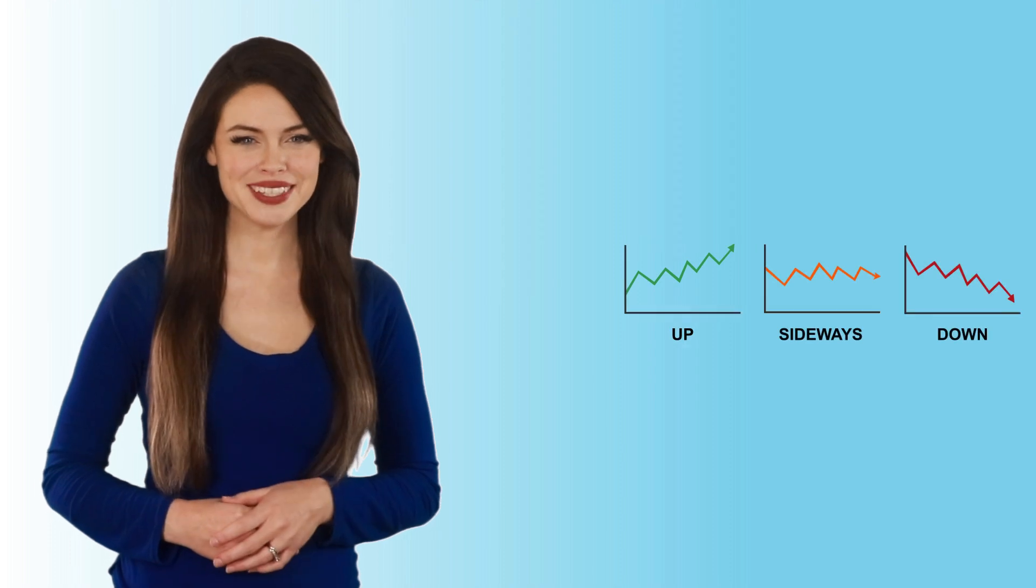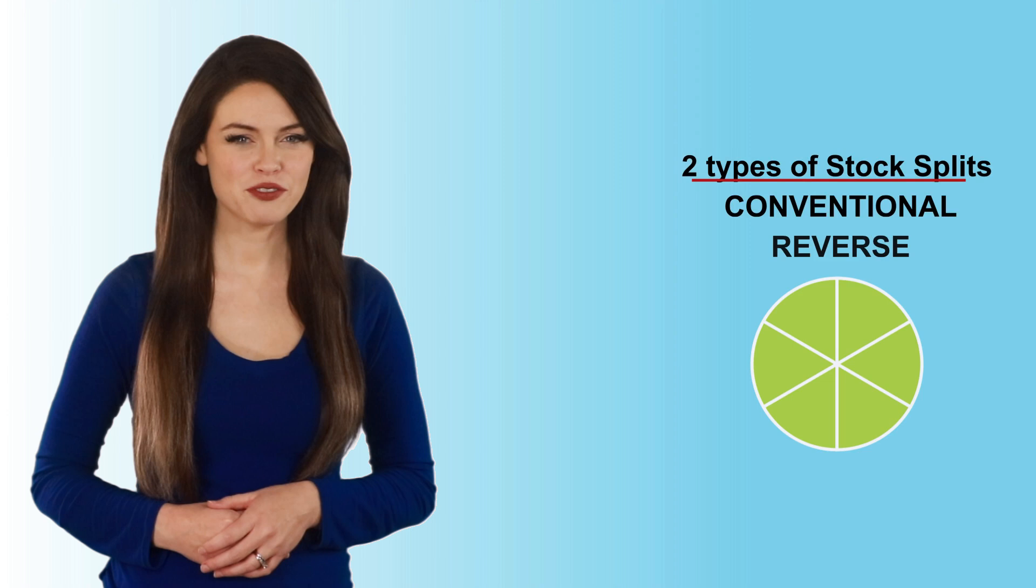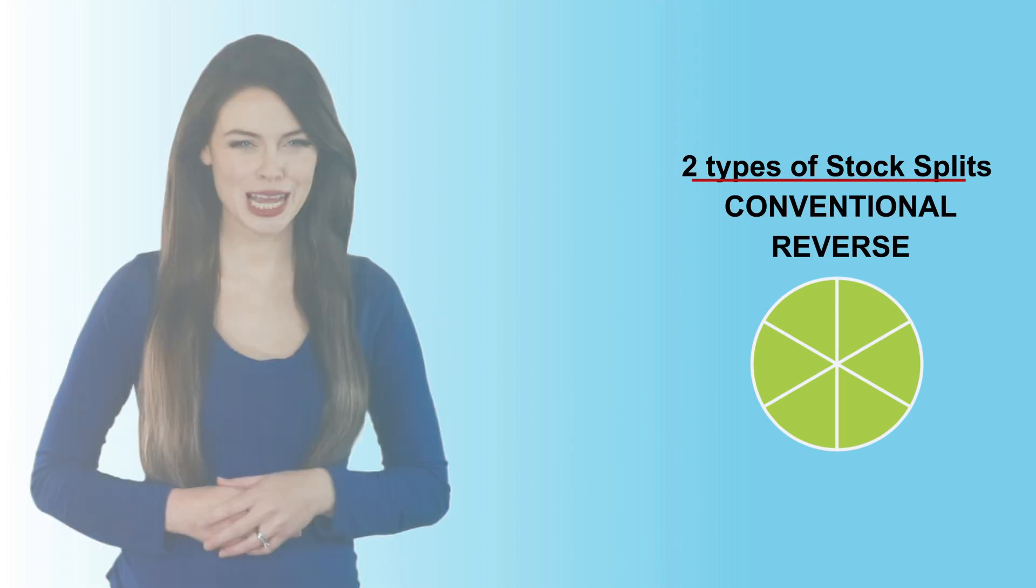Stocks exhibit a variety of price fluctuations, including ups and downs, sideways movement, and occasionally, unexpected splits. The conventional and reverse stock splits are the two types.